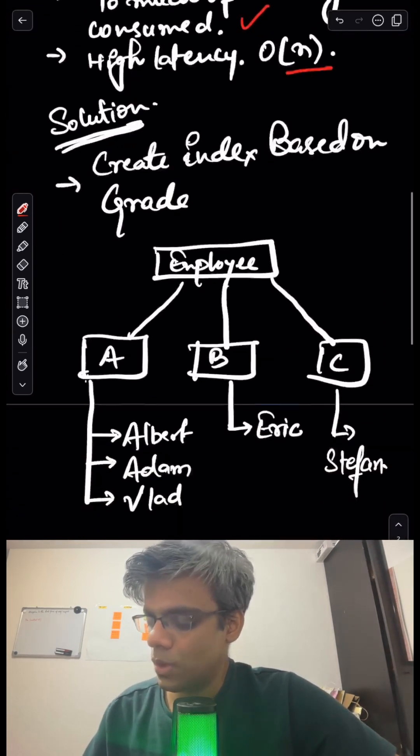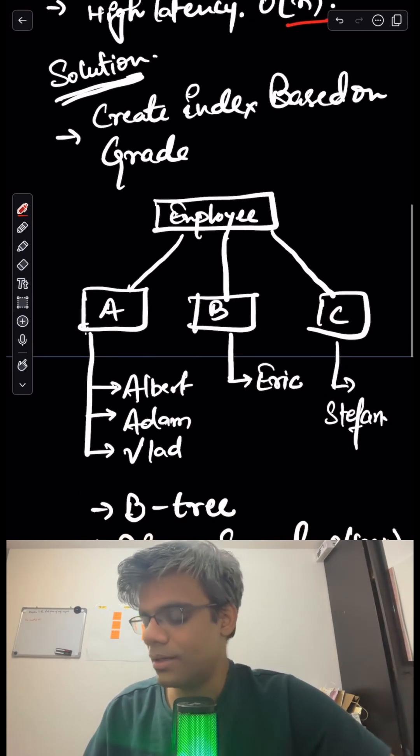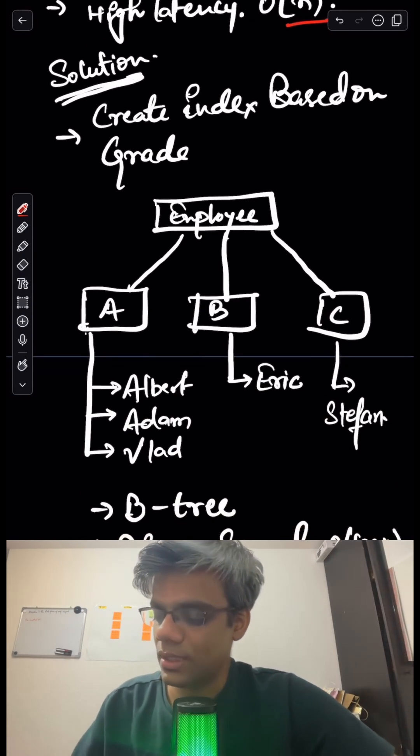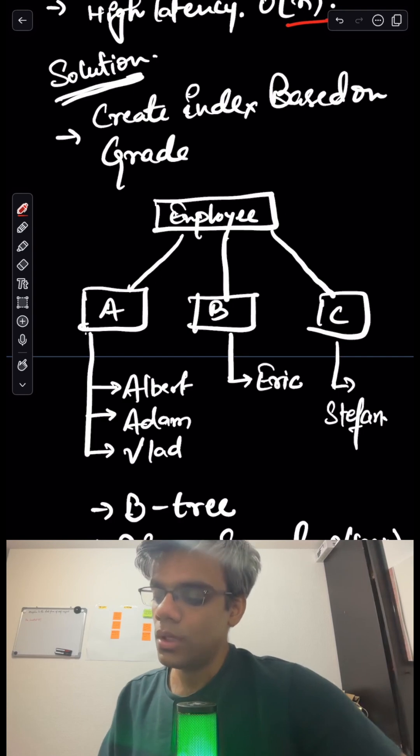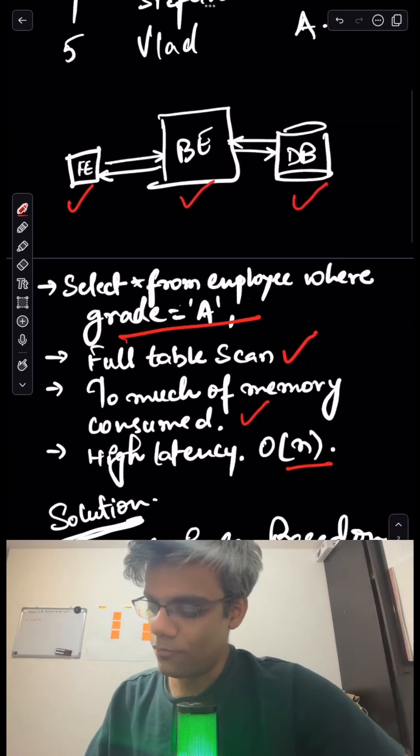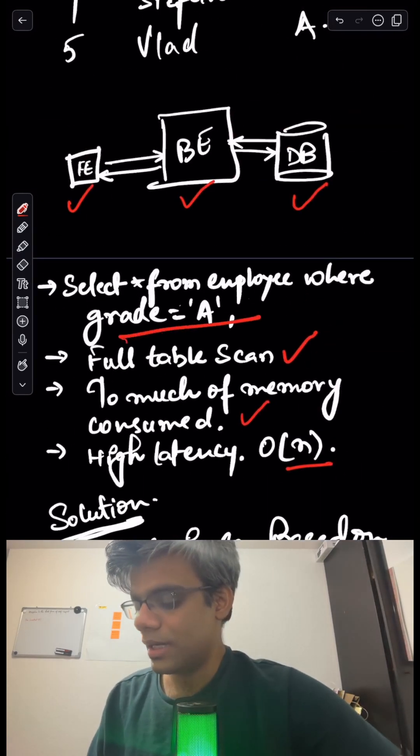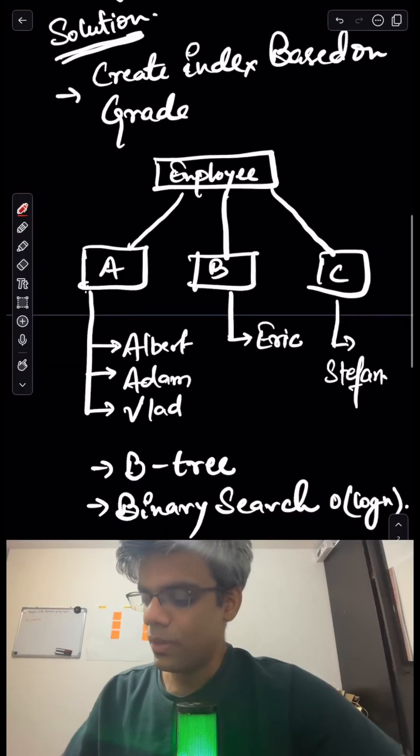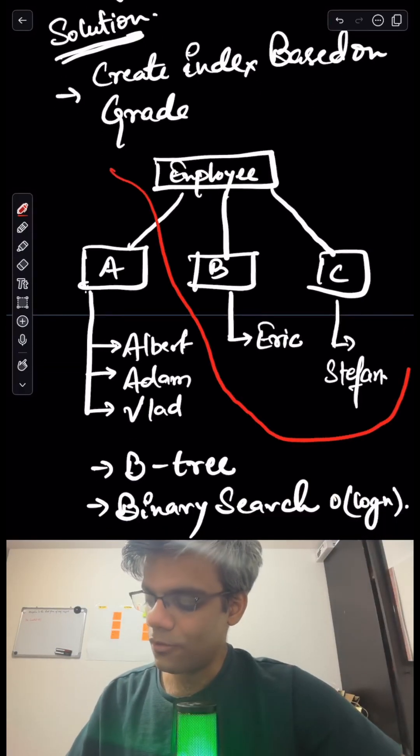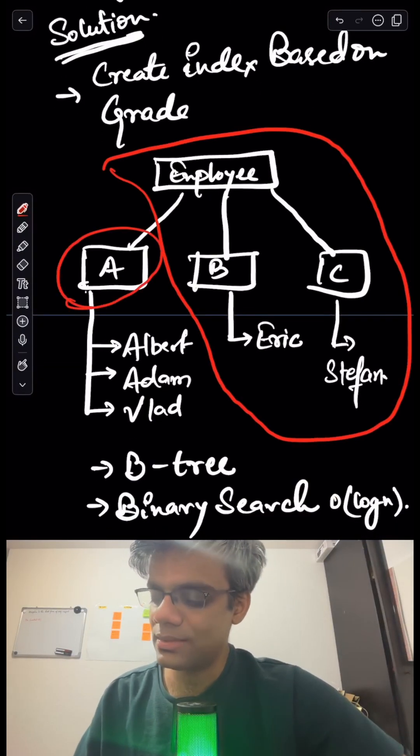So what we'll do is create a binary tree and index it based on the grade column so that whenever you do this query again—SELECT * FROM employees WHERE grade = 'A'—we totally neglect the rest of the table and only focus on index A and the records associated with it.